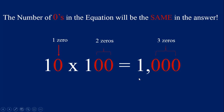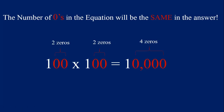Let's look at 100 times 100. Work left to right — multiply 1 times 1 first and get 1, so we write that answer first. Now count your zeros: 1, 2, 3, 4 zeros are in the equation. So we write four zeros after the 1 and get the answer of 10,000.